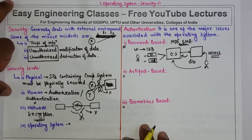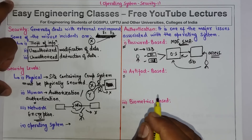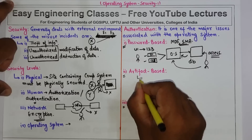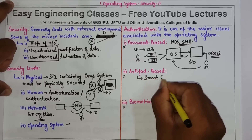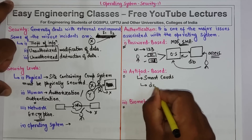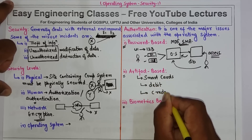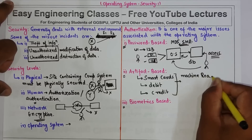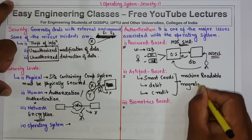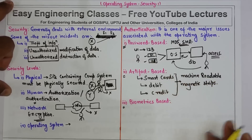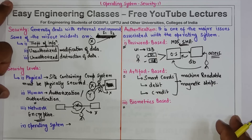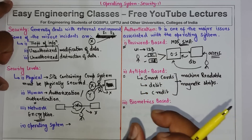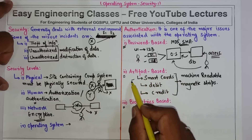The second type of authentication mechanism is artifact-based. Artifact-based authentication mechanisms include machine-readable strips or magnetic strips, and these can be smart cards, debit cards, credit cards — all of these contain machine-readable magnetic strips. Card readers are installed in the company and the user or employee is required to supply the artifact, such as a smart card or any other card, for authentication purposes.